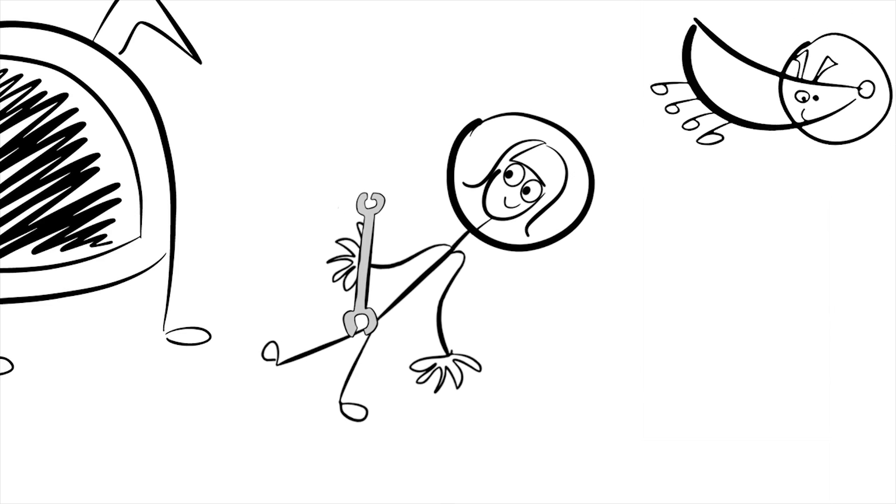This section is all about conservation of momentum. If you're floating freely in space and you're separated from your spacecraft and you're holding a spanner, what can you do to get back to your spacecraft? First of all, why can't you just swim back?